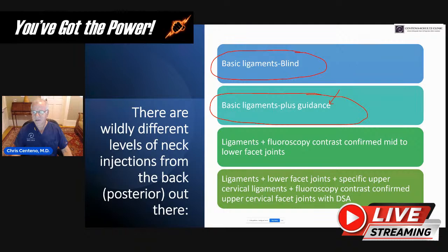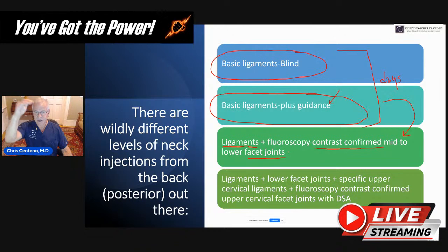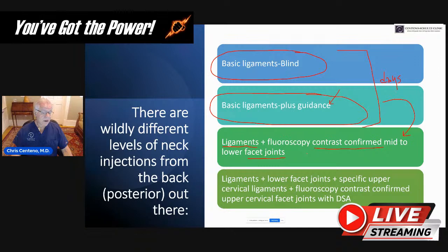Then we've got the next level up. These two basic levels — I could teach someone to do this in a few days. A weekend course would be fine; they'd be safe and good to go. But then there's a major leap into this next category, where you're injecting the ligaments and doing what's called contrast-confirmed facet joint injections in the lower neck — anything around C2-3 and below. That's not something you can teach someone in days. It requires fellowship training or some other intensive training, and it might take a full one to two years to really get good at placing things exactly into those small, finger-sized joints in the neck.